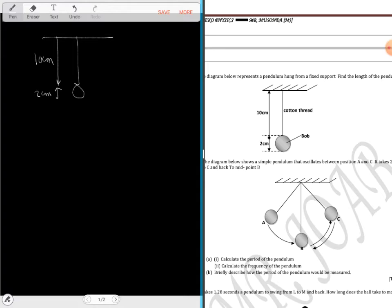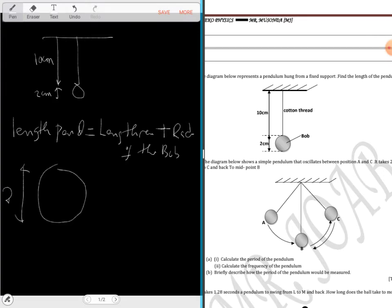The length of the pendulum is equal to the length of the thread or string plus radius of the bulb. The bulb has a two centimeter diameter, so to find the radius you divide it by two. So we have one centimeter, and we add it to the length of the thread.